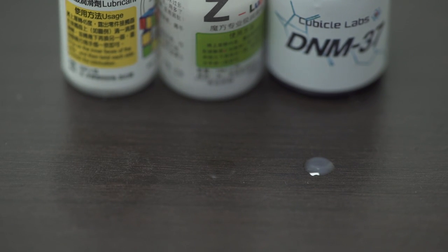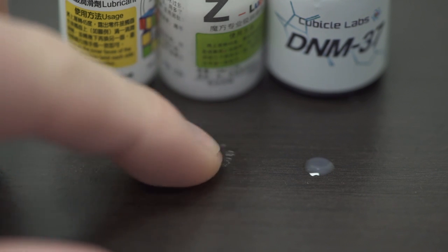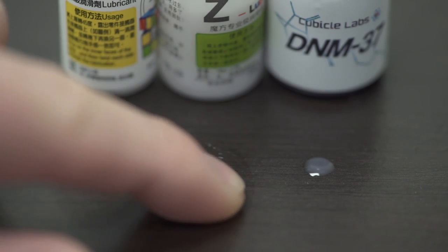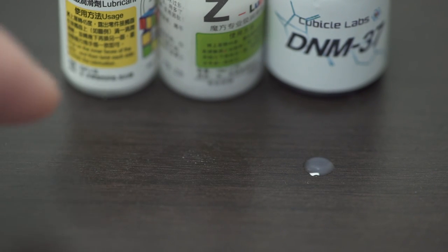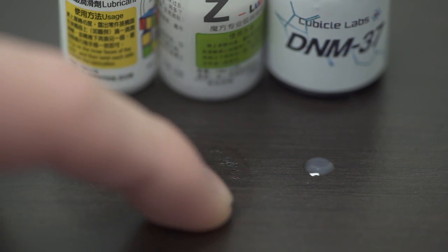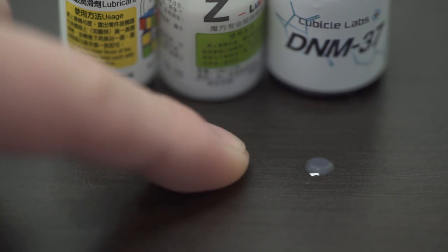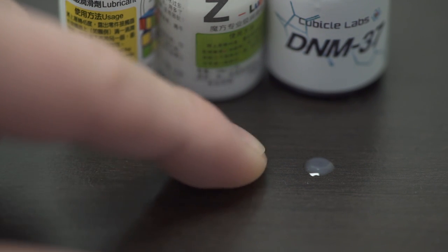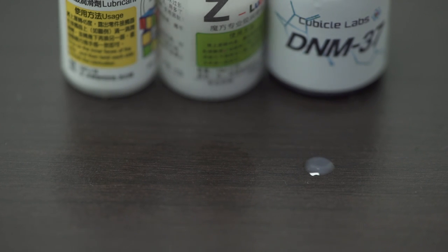And now let's touch the Z-Lube. You can see the Z-Lube still has a little bit of gumminess, though there's very little water left. It's a very gummy sort of remainder.